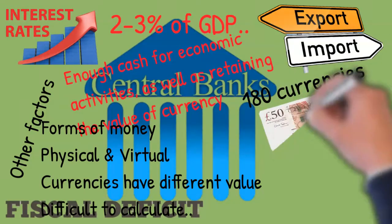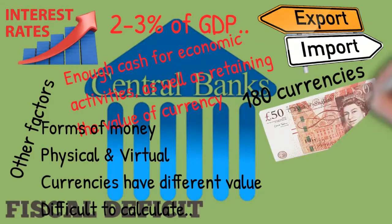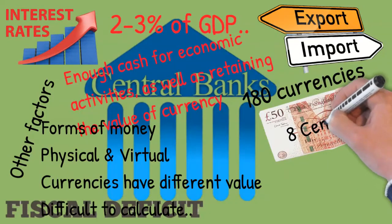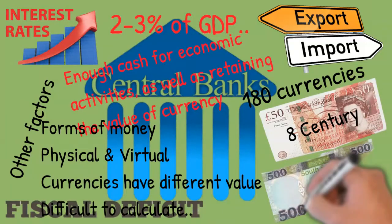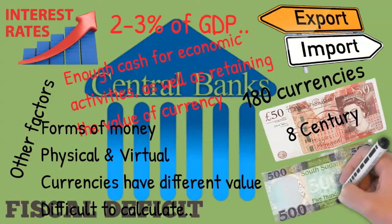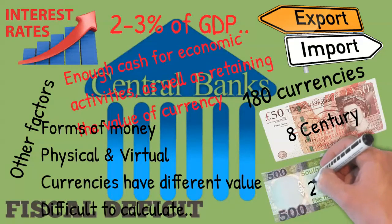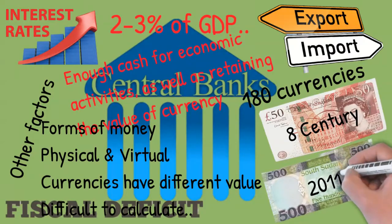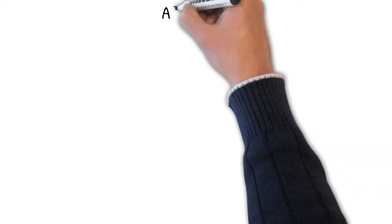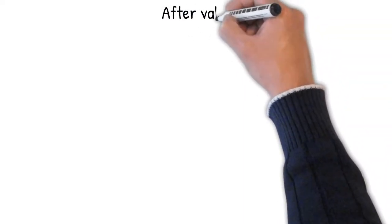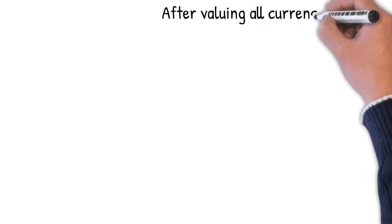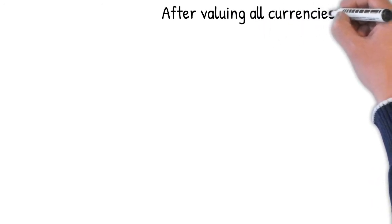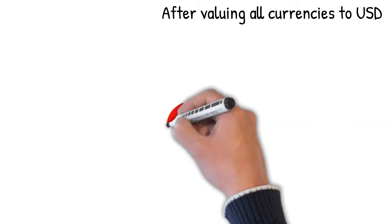As of 2020, there are around 180 currencies recognized by the United Nations. The British pound is considered the oldest currency in the world, dating back to almost the 8th century, and the South Sudanese pound is the newest currency, officially launched on the 18th of July 2011.